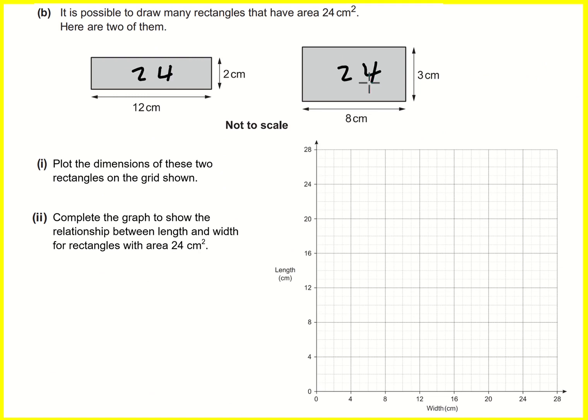How can we sketch this, plot the dimensions of these? It depends what you want to call the width and what you want to call the length, to be honest. I think they mean that this 12 is the width and two is the length. So if I plot that, it's going to be here. If I do the same with 8 and 3, then it's going to be here. Okay, so I've done the first bit.